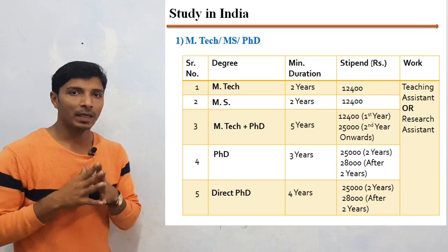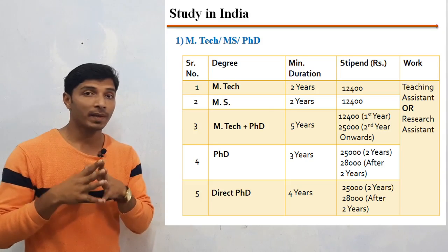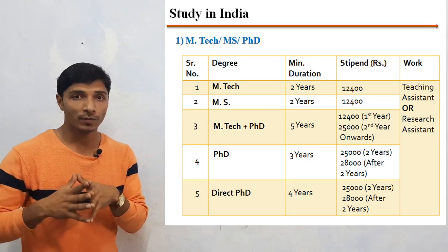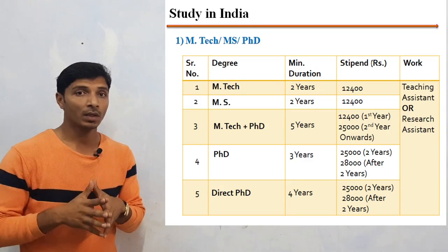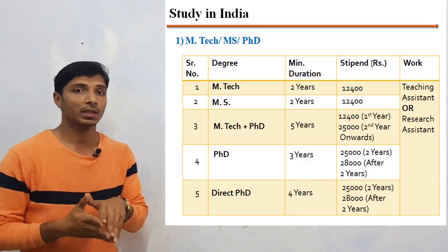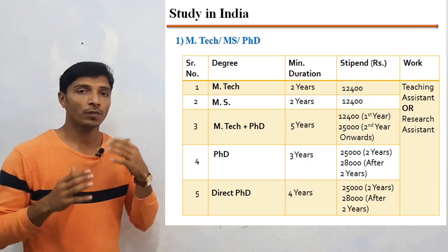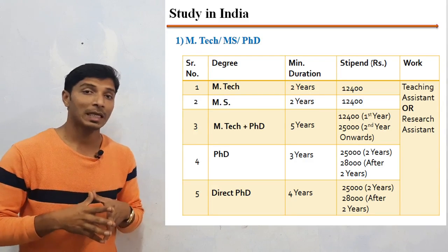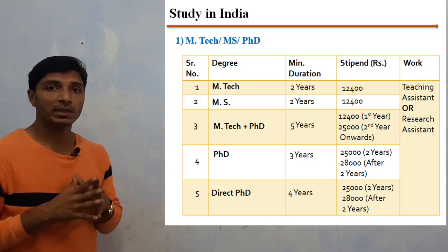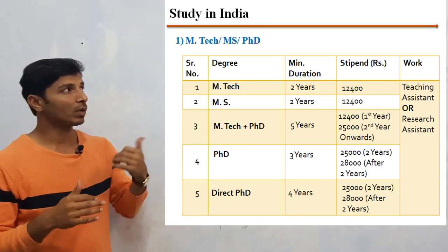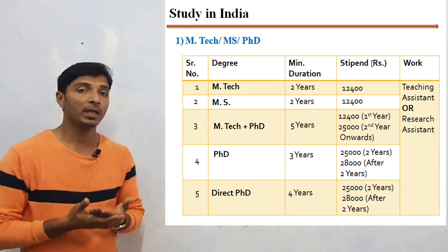The second choice is an MS degree. You may think MS is only offered by foreign universities, but IISc Bangalore is the best institute in India that provides the MS (Master of Science) degree. There is a difference: in M.Tech, you do coursework for the first 2 to 3 semesters and research for 1 semester. In MS, you take only a few courses in the first semester, then carry out research from the second semester onwards. MS is a research-based degree, with a minimum duration of 2 years and a stipend of ₹12,400, though it may extend to 3 to 4 years.